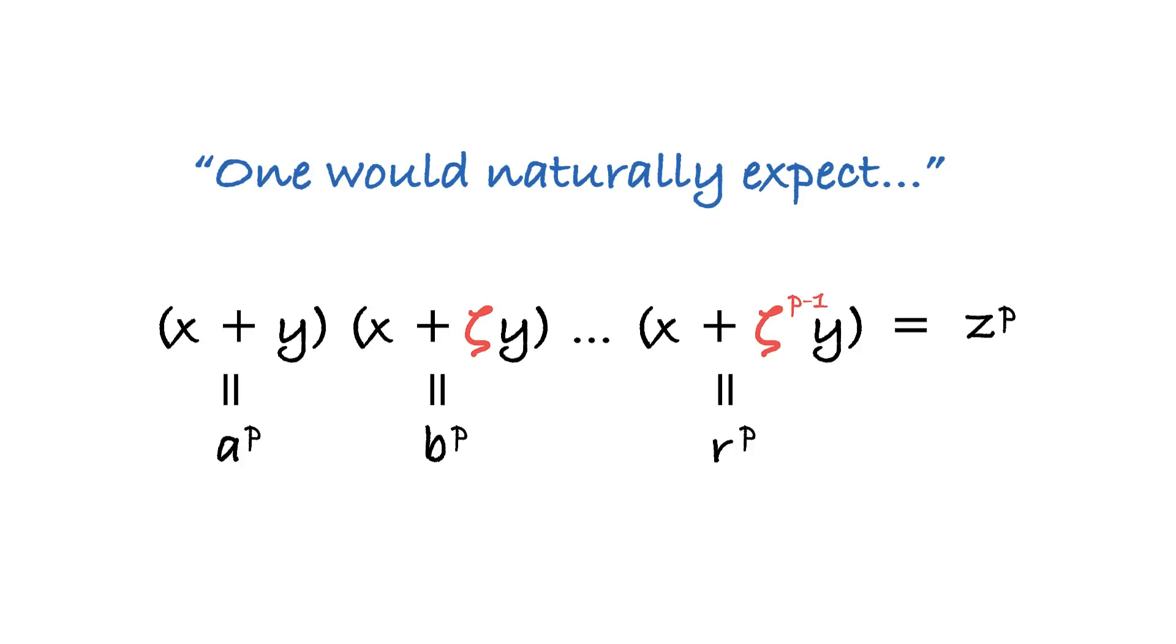We just said one would naturally expect that each factor on the left is a p power. Strangely enough, there is nothing natural about that. It's a flaw in our thinking. See, we got really spoiled by the ring of integers Z. In Z, we have what is called unique factorization. That means that a number can only have one decomposition into primes, up to the order of multipliers of course, and invertible elements of ring Z, which are one and minus one.